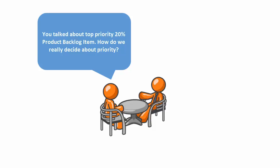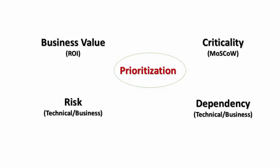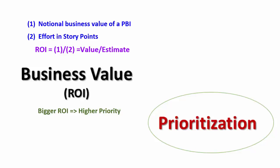You talked about the top priority 20% product backlog items — how do we really decide priority? First, you need to tell us the notional business value, say in dollars, for every deliverable. This helps us compare items. We then estimate the efforts in story points. The ratio of these two gives us an ROI figure: ROI equals business value divided by estimate in story points. We then take the higher ROI items first.